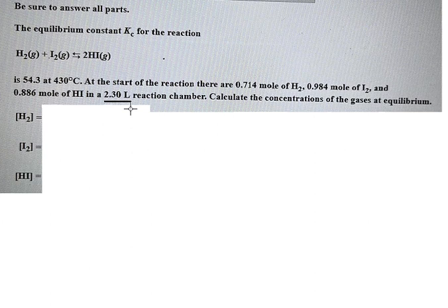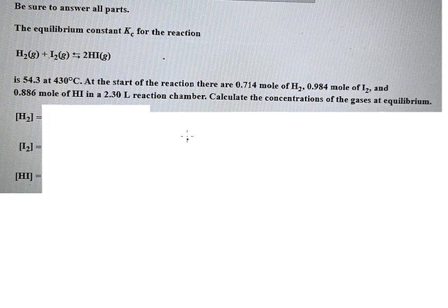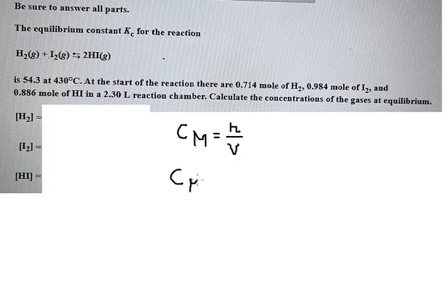Now I want to show you how to answer. The first thing we need to find is CM, the molarity, which is n divided by V. Now we need to find hydrogen, iodide, and I₂, so that should be like this.